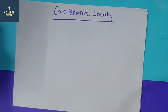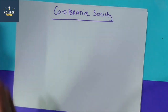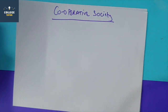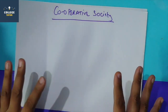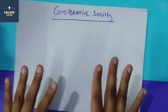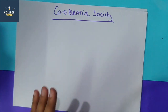In cooperative society, we will understand its meaning. We will see its definition. After the definition, we will see its features, advantages and disadvantages. So first of all, we will understand what is a cooperative society.